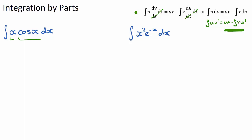In this first question, I'll let u equal x because I want u' to be a constant, which gives u' = 1. So u = x and v' = cos(x). Underneath, u' = 1 and v is the integral of cos(x), which is sin(x).